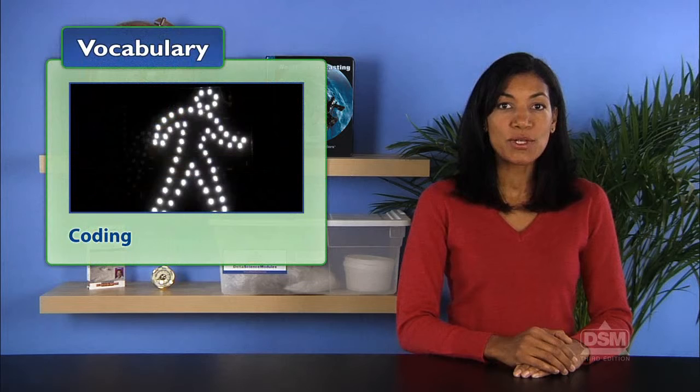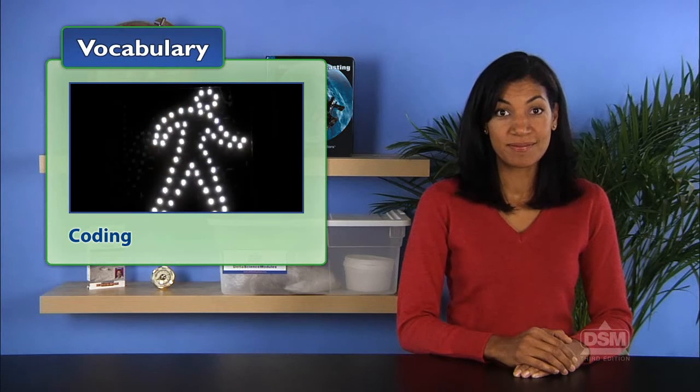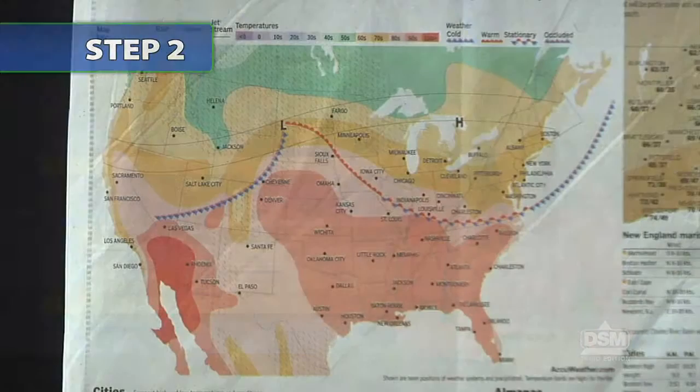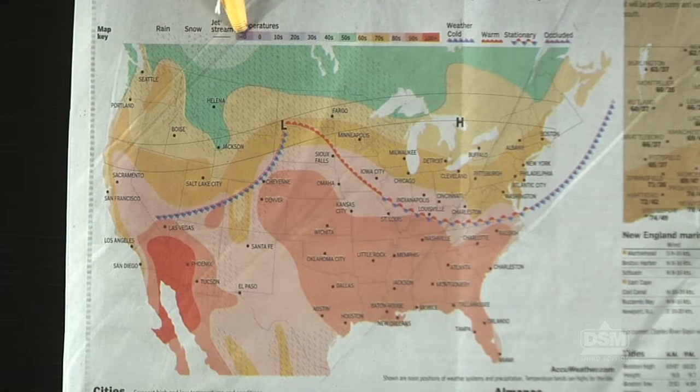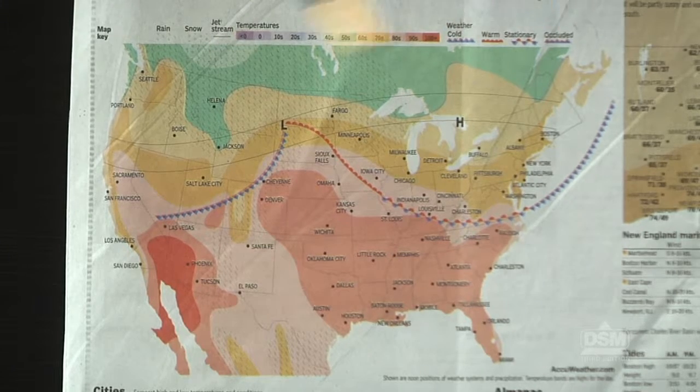Define coding for students as the use of symbols to convey information. Bring students' attention to one or two of the weather maps that have been collected and point out the codes on the weather maps. Have students imagine that they work for the National Weather Service, and it is their job to record the weather data from all the big towns and cities on a weather map every day. Ask them how they would go about doing this.